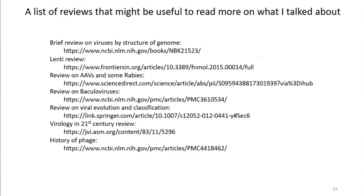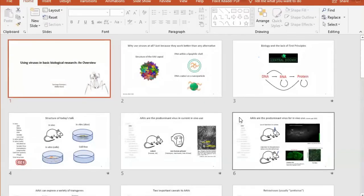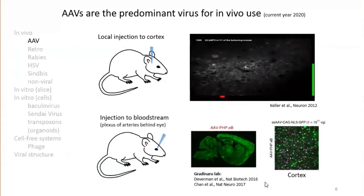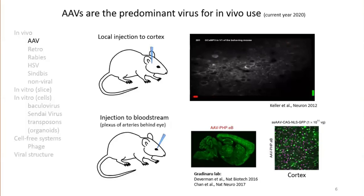On whether viruses cross the blood-brain barrier: the AAV serotype PHP.eB — developed and improved by the Gradinaru lab, with a second-generation version in their 2017 paper — does this very efficiently. You inject it into the back of the eye where there's a plexus of blood vessels; no tail vein injection needed. It's quite efficient, and many labs have switched to this approach because it's more convenient and shows less animal-to-animal variability than local injection.